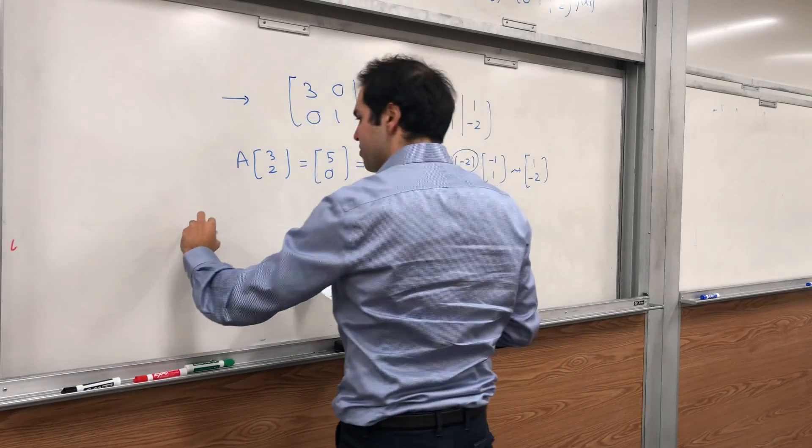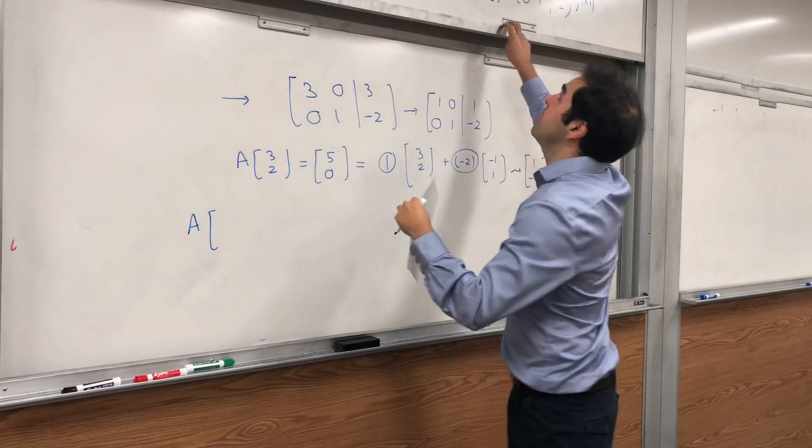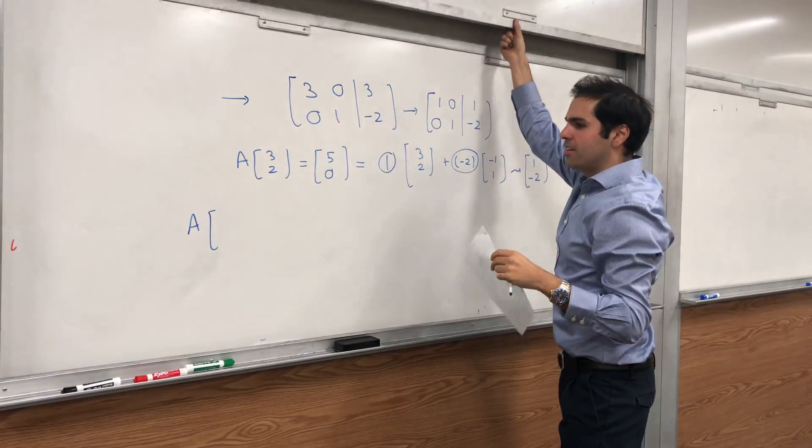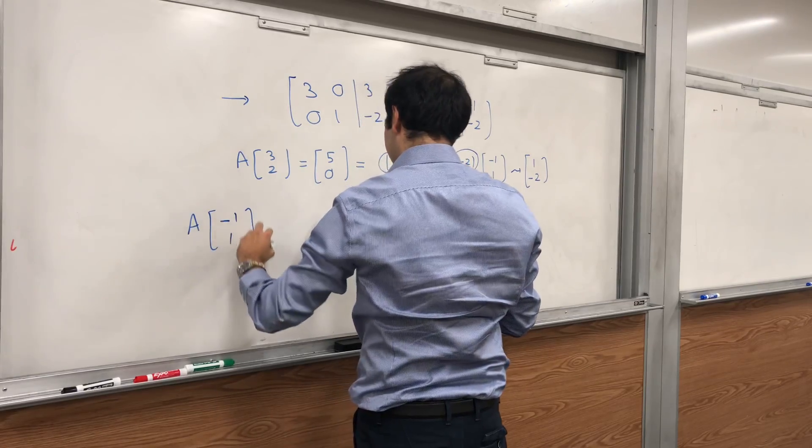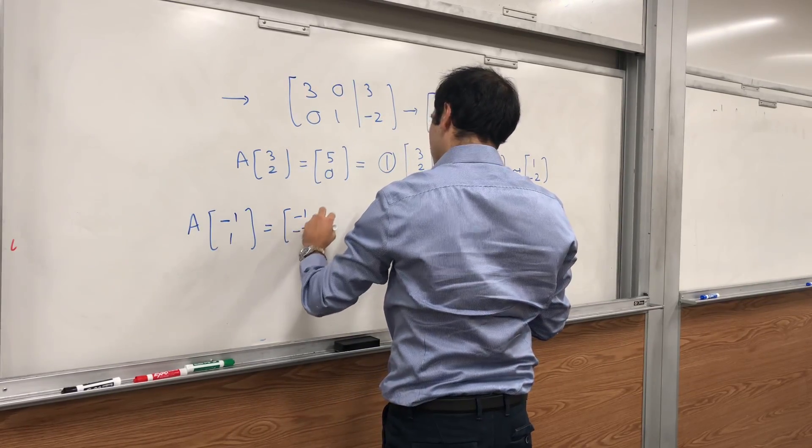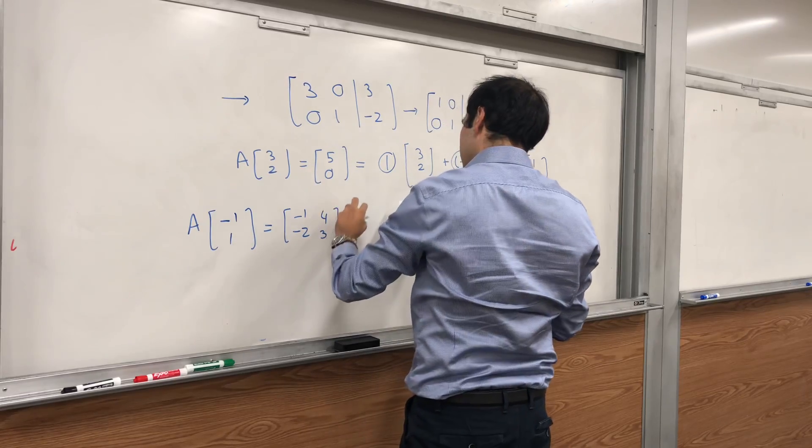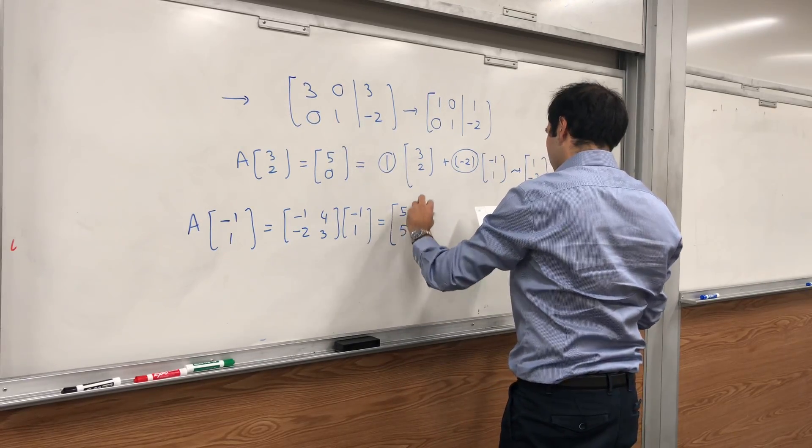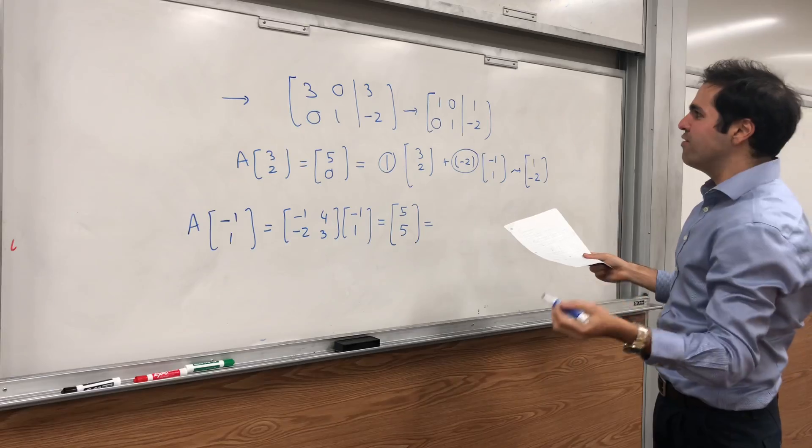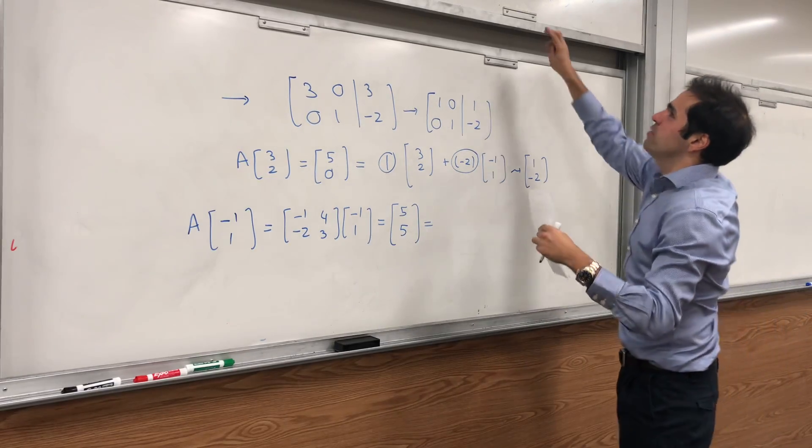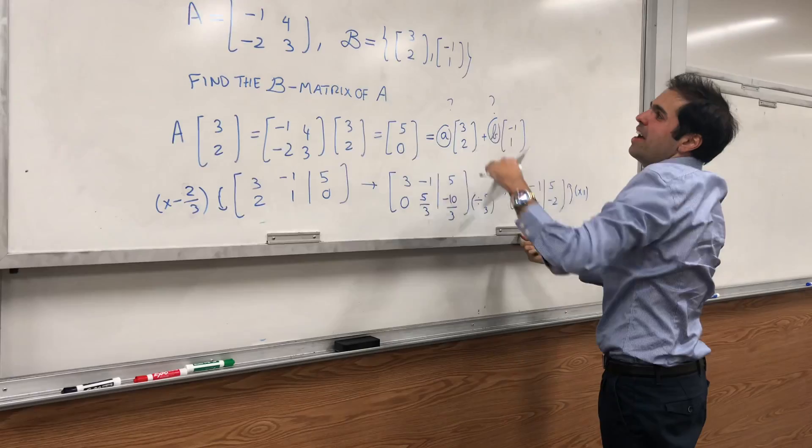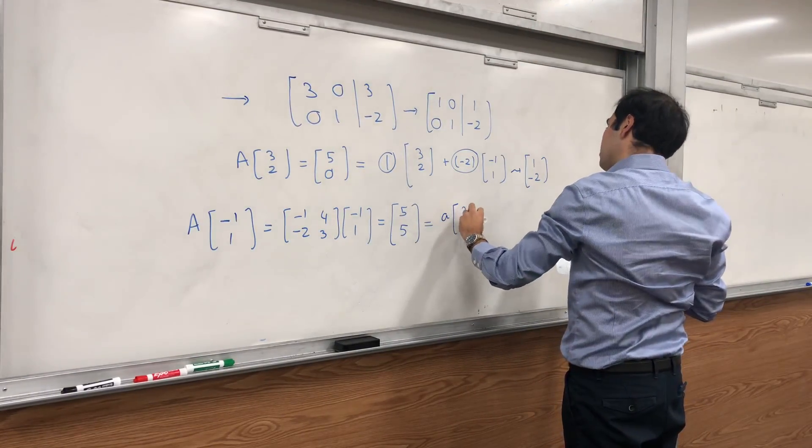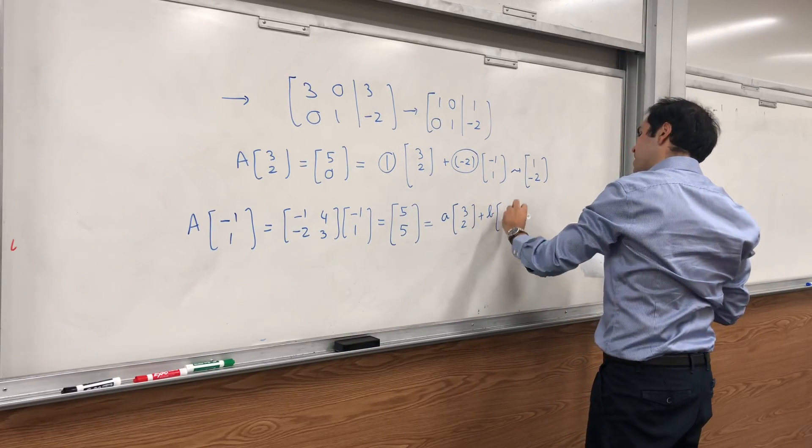And then for the second vector, for the second column, you do A(-1, 1). Calculate that, so it's [-1, -2; 4, 3] times (-1, 1). And if you do that, you get (5, 5). And again, just as before, you want to write this in terms of your basis vectors (3, 2) and (-1, 1). So it's a times (3, 2) plus b times (-1, 1).